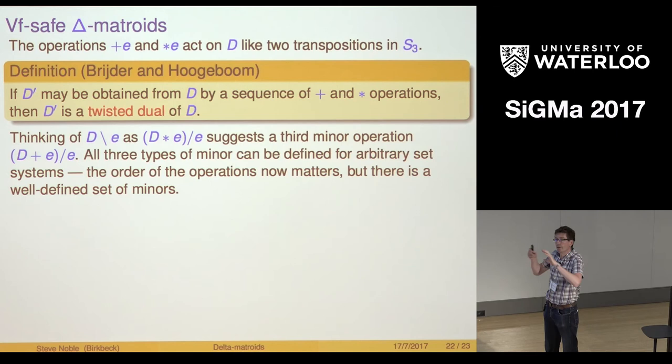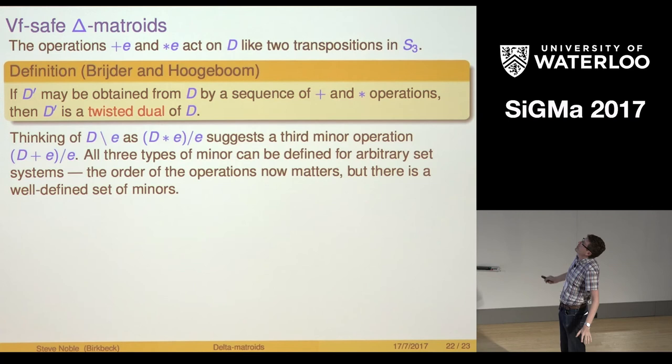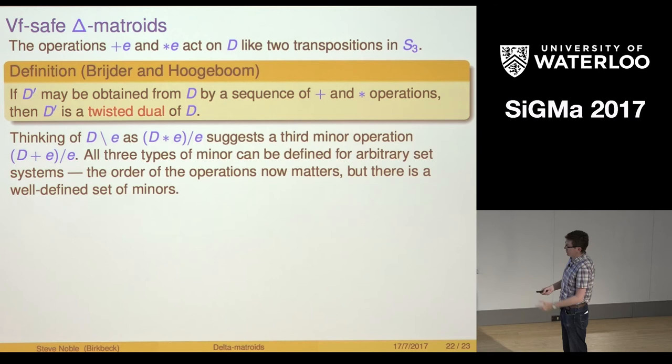Let's suppose though we want to try to do this on an arbitrary set system. Rather than having the bases of a matroid or the feasible sets of a delta matroid, I've just got a bunch of sets. All these things are defined. You may not get something nice. You lose that the order of the operations doesn't matter, but you still get a well-defined set of minors. You can think of all the possible minors you can get from these things.